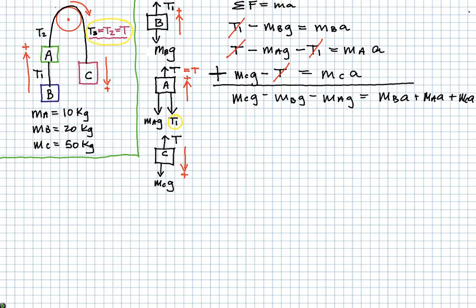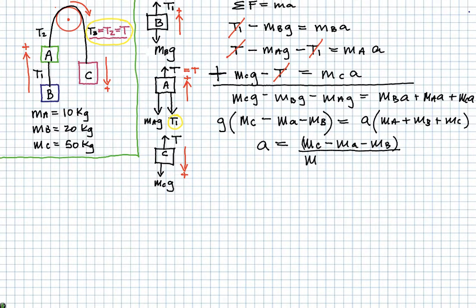Now I can factor this. So I'm going to rearrange this in alphabetical order. So if I factor out the G, I'll have G times MC minus MA minus MB. So I just rearrange the A and B is equal to A times MA plus MB plus MC. And I just place the M's in alphabetical order there. So that means that A is equal to MC minus MA minus MB divided by MA plus MB plus MC.